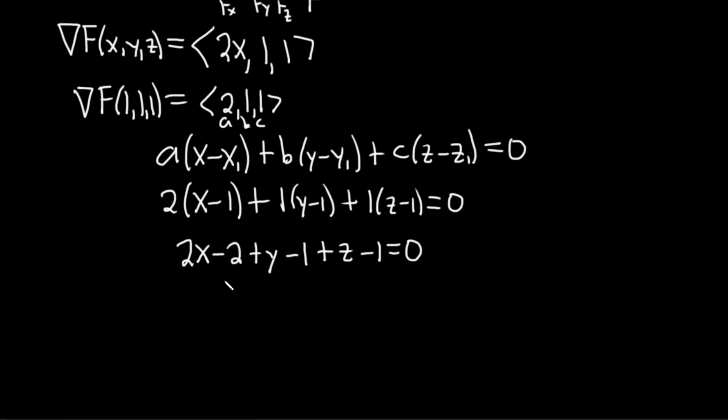And I guess at this point, we can cancel some stuff. So we've got 2x plus y plus z. And it looks like we have minus 4 here. And that's equal to 0. So I'll add the 4 over. So 2x plus y plus z, and that's equal to 4. And this would be the equation of the tangent plane at 1, 1, 1.